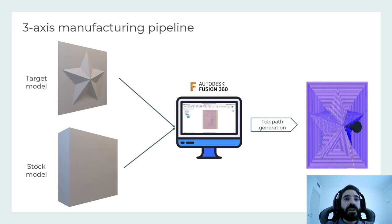There exist many CAM software packages for 3-axis machining. In the standard pipeline, they take as input the model of the stock and the target shape, and output a toolpath.